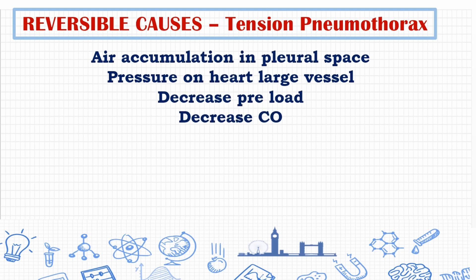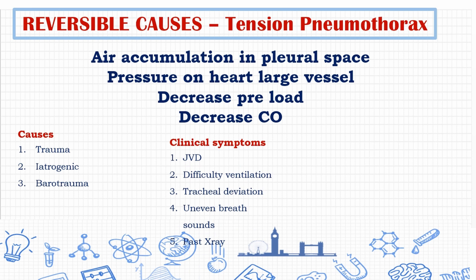Tension pneumothorax is the accumulation of air in the pleural space, which builds pressure on the heart and vessels, decreasing preload and cardiac output. Causes include trauma, iatrogenic, and barotrauma. Clinical findings include jugular vein distension, dyspnea, tracheal deviation, uneven breath sounds, and X-ray findings. Management is needle decompression and chest tube insertion.